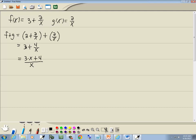So again, what I did: took the number out in front, multiply it times the denominator, added the top part. So that gives us 3x plus 4 over x, for f plus g.